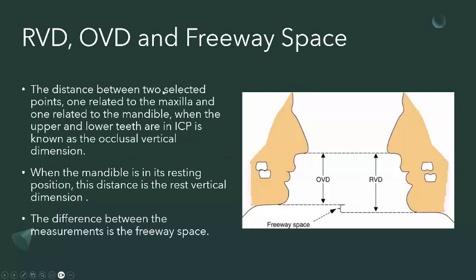The distance between two selected points — one related to the maxilla and one related to the mandible — when the upper and lower teeth are in the intercuspal position is called the occlusal vertical dimension. When the mandible is in the resting position, this distance is the rest vertical dimension. The difference between the rest vertical dimension and the occlusal vertical dimension is known as the freeway space.